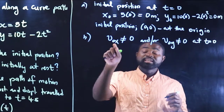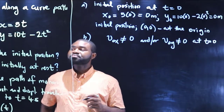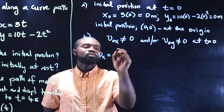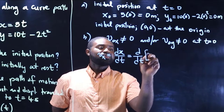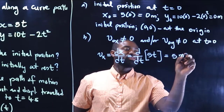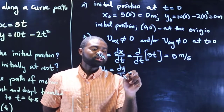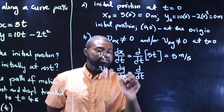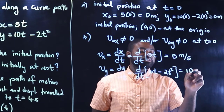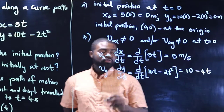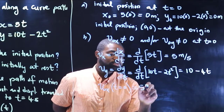For the car to be at rest, the initial velocity in both the x and y directions must be 0. So vx is equal to dx over dt, which is d/dt of 5t, and this is going to be equal to 5 meters per second. vY is dy over dt, which is d/dt of 10t minus 2t squared, and this is going to be equal to 10 minus 4t. Therefore, vox, which is vx at t equal to 0, is equal to 5 meters per second.